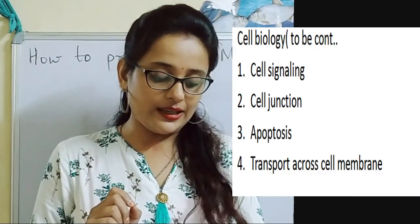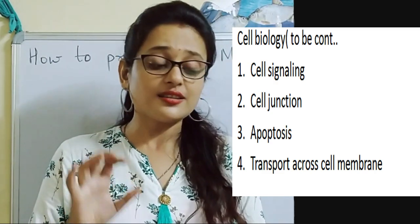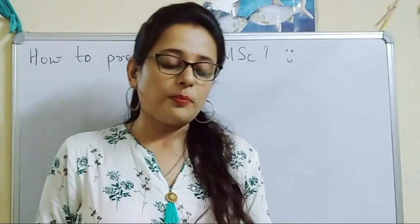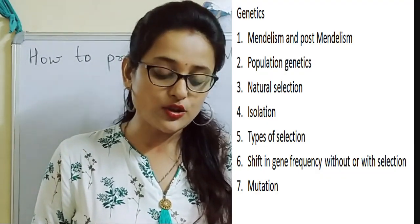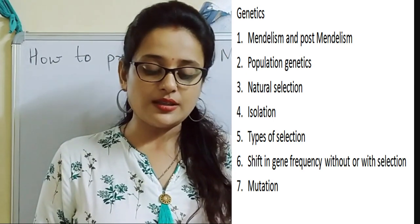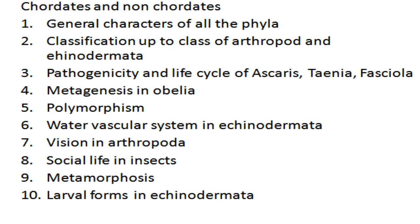In cell biology, also add cell signaling, cell junctions, and transport across the cell membrane — these topics are very important. In genetics, add the study of fossils, isolation, natural selection, types, gene frequency with or without selection. For zoology (cordates and non-cordates), read the general characters of all phyla and classification up to classes for Arthropoda and Echinodermata.